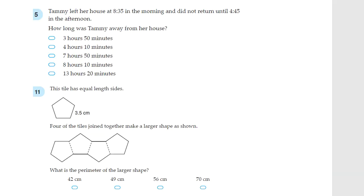Question 5. Tammy left her house at 8:35 in the morning and did not return until 4:45 in the afternoon. How long was Tammy away from her house? So 8:35am to 4:45pm. We can do it a couple of ways. Let's do it this way.